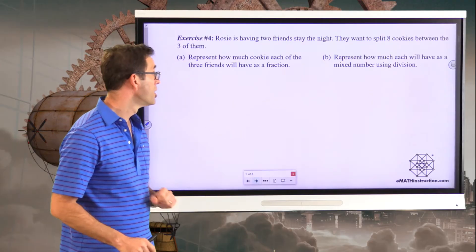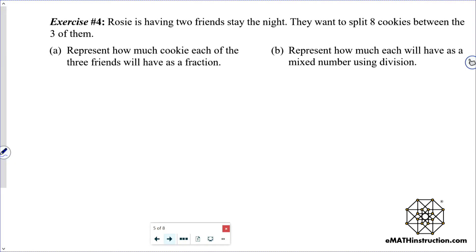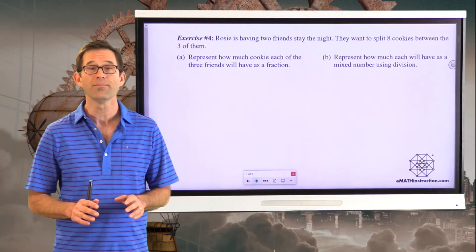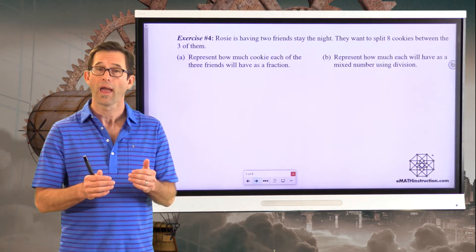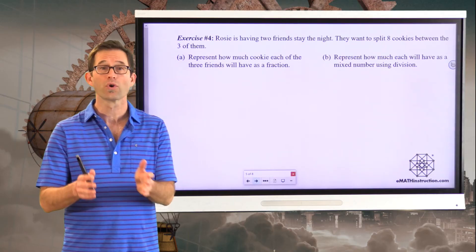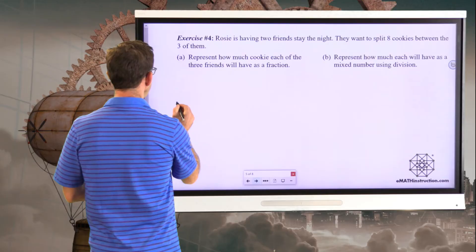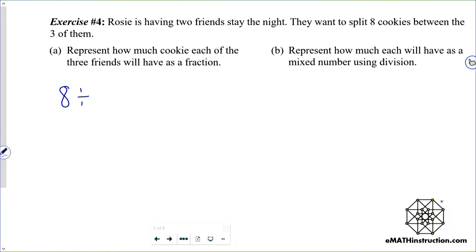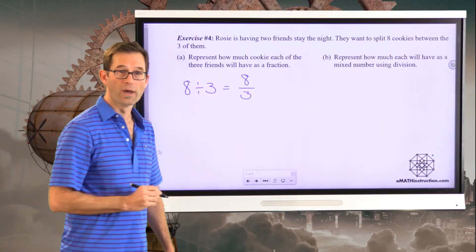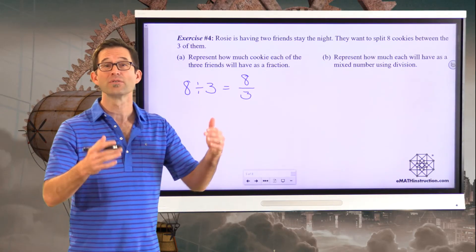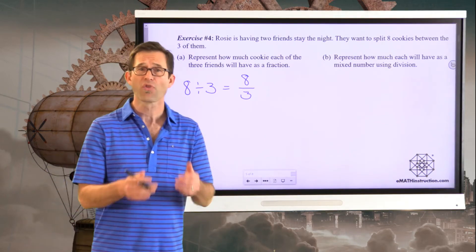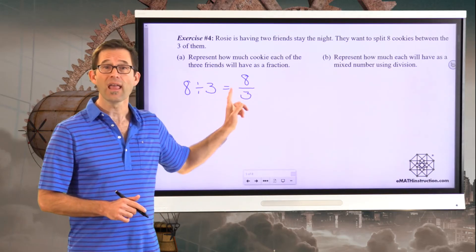Exercise number four: Rosie is having two friends stay the night. They want to split eight cookies between the three of them. Letter A asks us to represent how much cookie each of the three friends will have as a fraction. We've got eight cookies divided amongst three friends, so we have eight divided by three — which as a fraction is eight thirds. Each friend has eight thirds of a cookie. That's more than one cookie, because three thirds is one cookie.